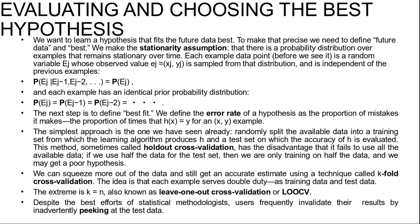Despite the best efforts of statistical methodologies, users frequently invalidate their results by inadvertently peeking at the test data. Peeking can happen like this: a learning algorithm has various knobs that can be tuned to adjust its behavior — for example, various criteria for choosing the next attribute in decision tree learning. The researcher generates hypotheses for various different settings of those knobs, measures their error rates on the test set, and reports the error rate of the best hypothesis. Peeking has occurred because the hypothesis was selected on the basis of its test set error rate, so information about the test set has leaked into the learning algorithm. Peeking is a consequence of using test set performance to both choose a hypothesis and evaluate it.